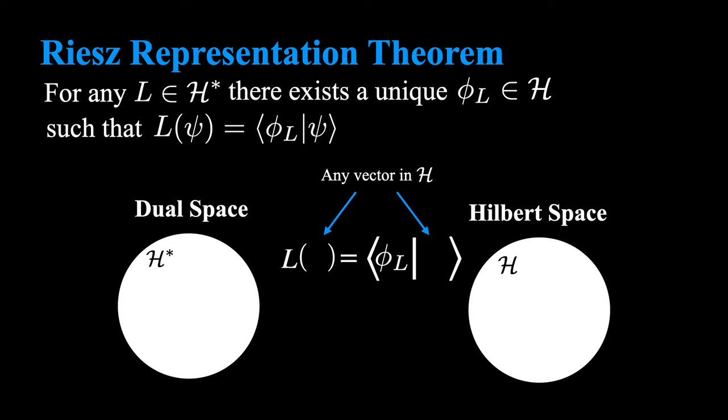So we can always associate any element in the dual space with a unique element in the Hilbert space. And because of this association, Paul Dirac suggested the use of the following notation. Since there will always be a unique phi sub L associated with every L, let's just say L equals phi sub L. And we will write it like this.